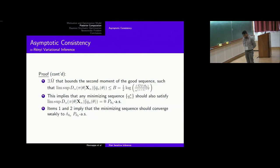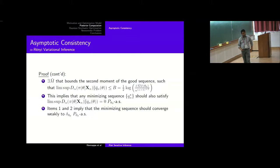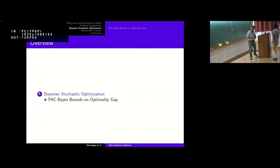We don't currently have a rate of convergence result — it's something we are working on. The closest thing in the literature is the Wang and Blei paper, which establishes a Bernstein–von Mises-type theorem, but that's not exactly a rate of convergence result either.